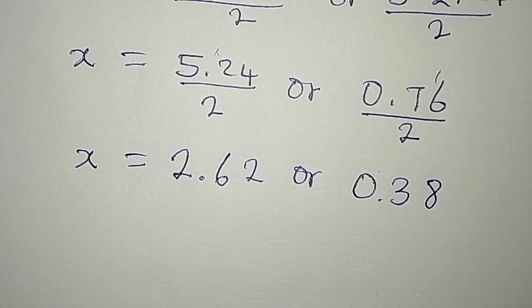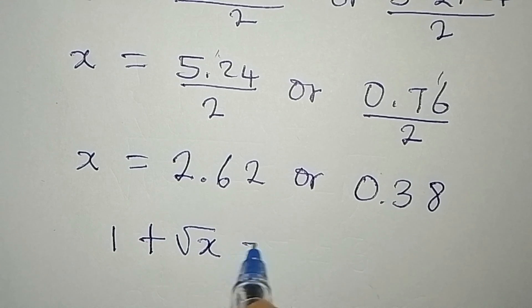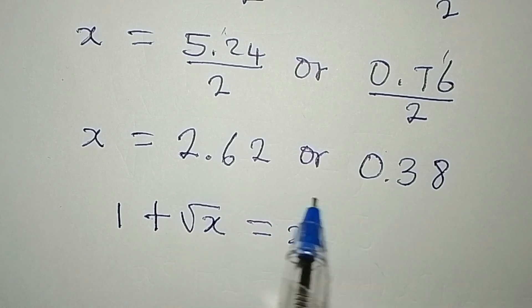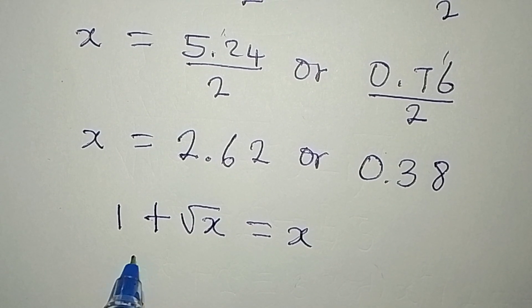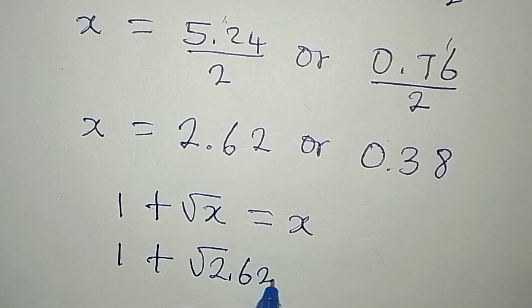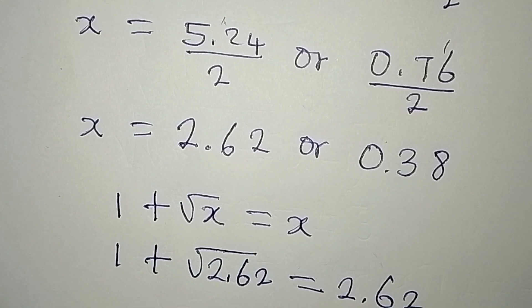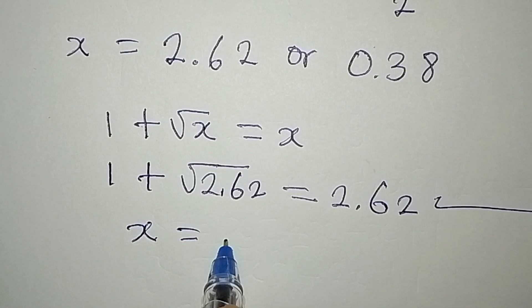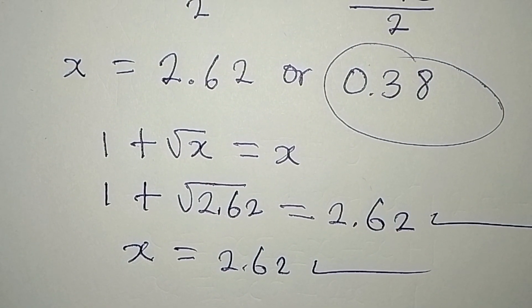But which of them would satisfy this equation, which is 1 plus square root of x equals x? Because it's obvious that both of them cannot satisfy since they are not the same thing and they are having the same sign. So what if I put 1 plus square root of 2.62. Will this be equal to 2.62 approximately? The answer will be yes. So this means that it is x equal to 2.62 that satisfies the equation. And that 0.38 does not satisfy.